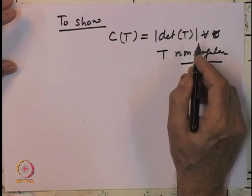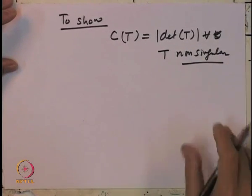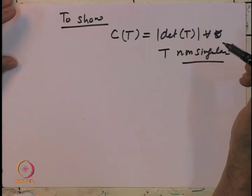What we have gotten is: for every non-singular T, there exists a constant C(T) such that λ_{R²}(T(E)) = C(T) · λ_{R²}(E). This gives a map T ↦ C(T), and what we want to show is that this map is exactly C(T) = |det T| for every non-singular T. To prove this, we need some more facts about linear algebra, and we will not be able to complete the proof in the remaining part of today's lecture. So we will continue from here next time.